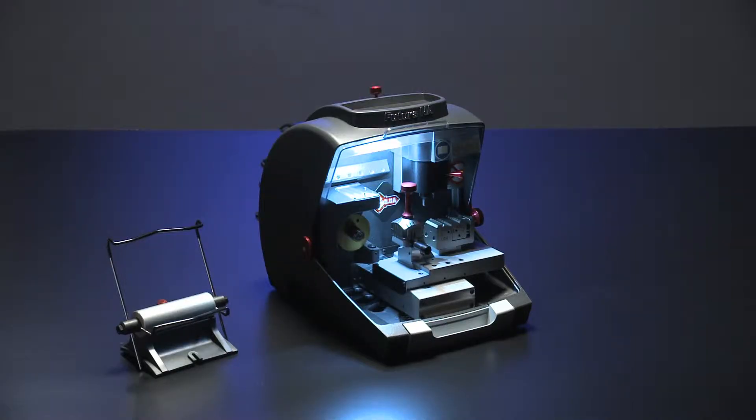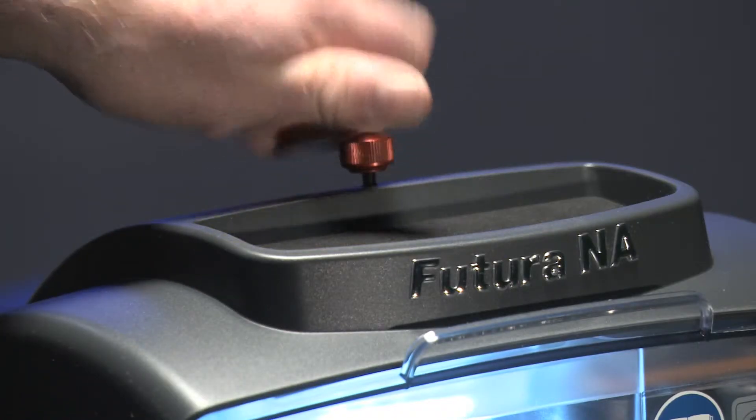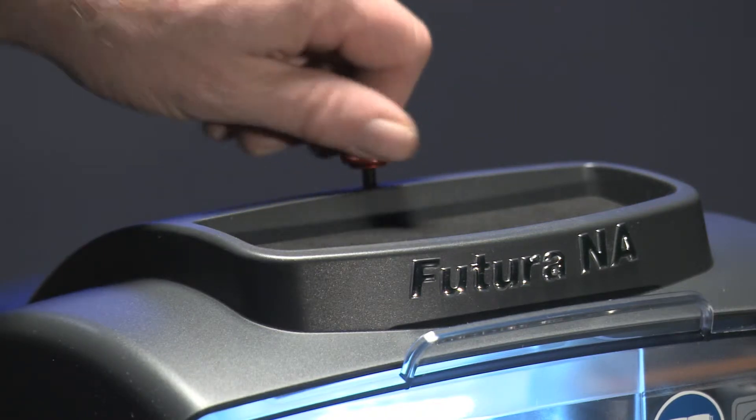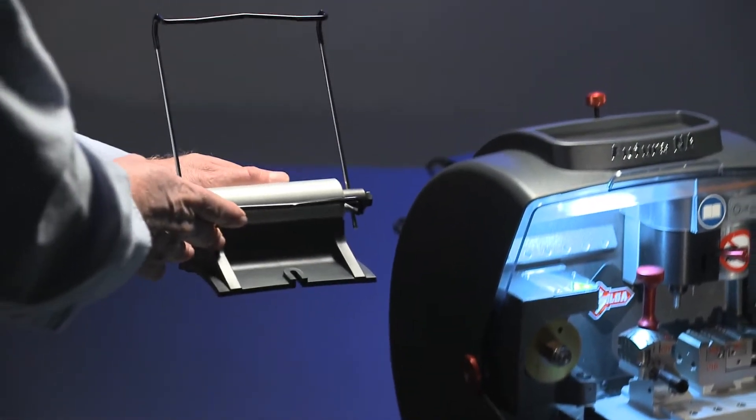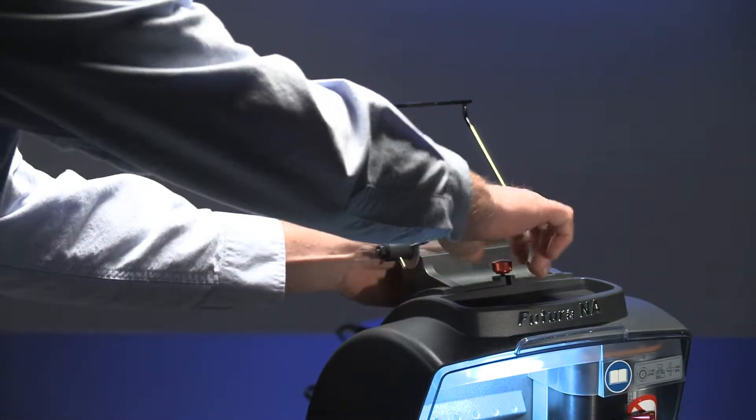The tablet stand can be placed next to the machine or attached to the top, whichever you prefer. To attach the stand, loosen the knob on top of Futura. Install the stand so the special profile fits into the slot on the cover, then tighten the knob.